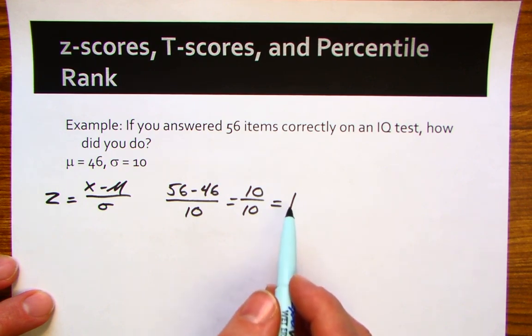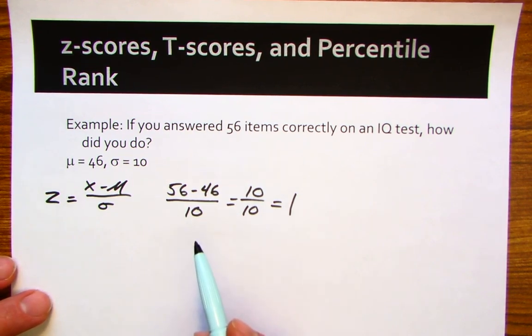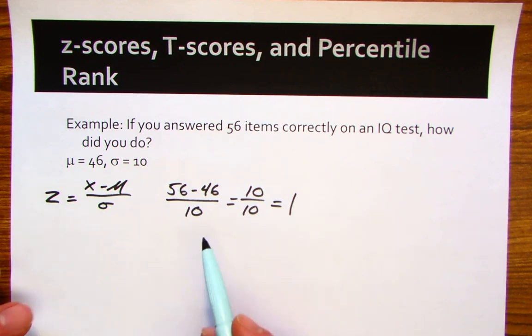Whenever you get a positive number for a z-score, you've scored above the mean. And whenever you get a negative number, you've scored below the mean. This gives us a sense of how we did on this particular IQ test.